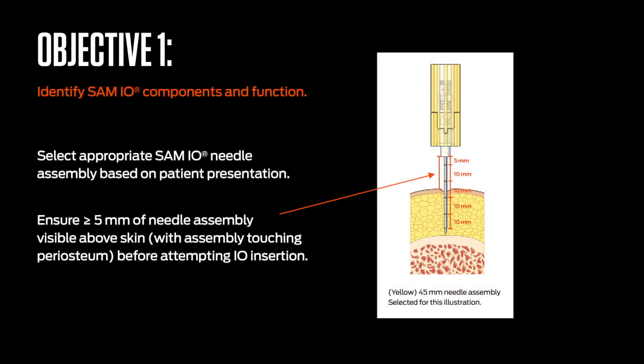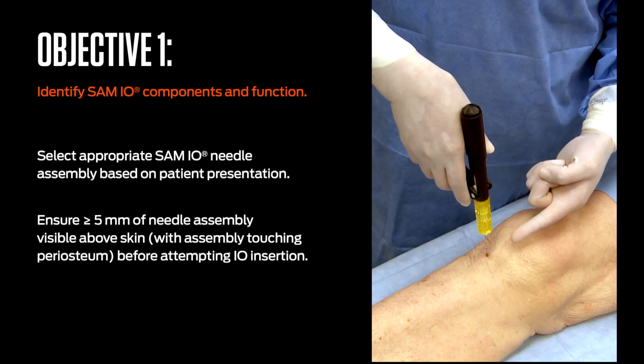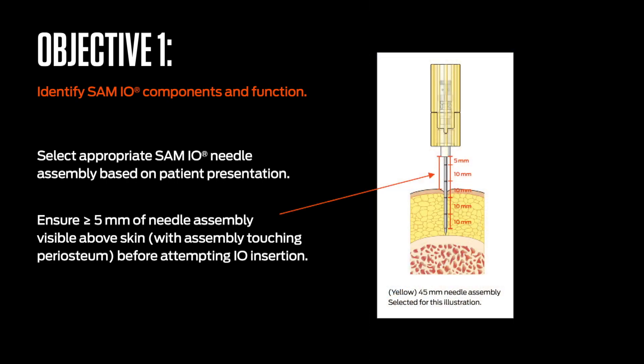At this point it's important to begin discussing needle assembly selection based upon overlying tissue depth at the insertion site. Ensuring that 5 millimeters of catheter is visible above the skin is important. The most accurate determinant of needle assembly length related to safe osseous access are the black depth indicators on the catheter. Depth indicators function as a measuring guide to determine the amount of soft tissue overlying targeted bone. Depth verification must be accomplished prior to the insertion attempt in order to determine if the needle assembly length is adequate to reach the medullary space.